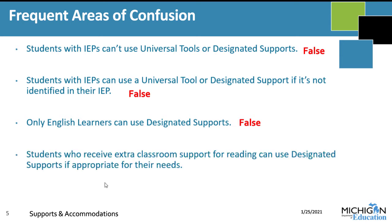And our last one: students who receive extra classroom support for reading can use designated supports if appropriate for their needs. This one is true. Designated supports are truly for any student, as long as educators at the local level have determined it is beneficial and it's something the student uses frequently in the classroom.